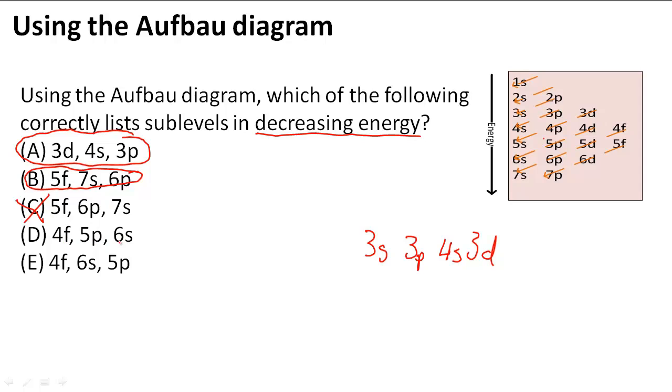So 4f, then 5p, then 6s. So 4f, which we have right here, then 5p, which is lower energy, and then 6s. 6s comes after 5p in the energy diagram. That means it's an increase in energy. So that means that D is also out of the running.